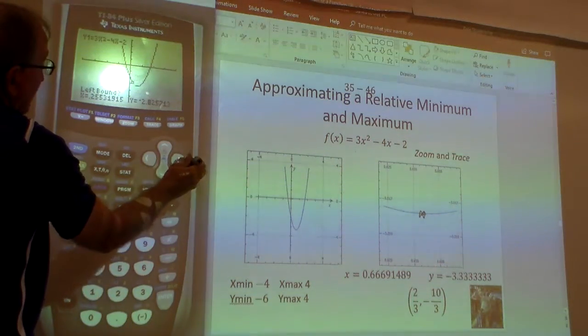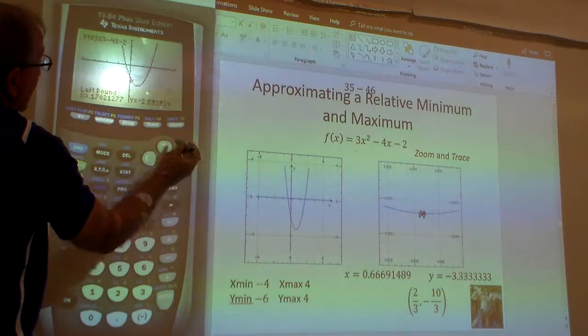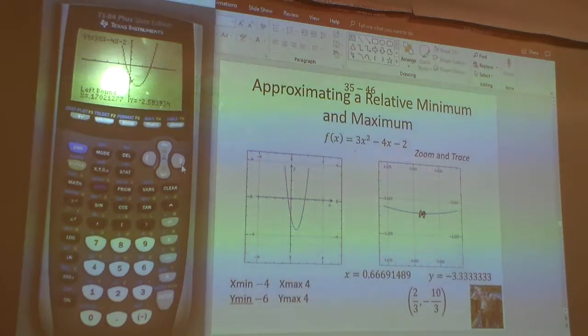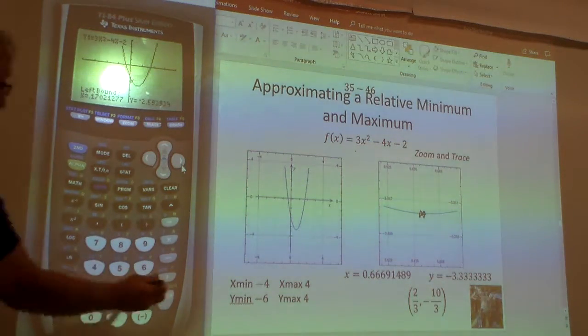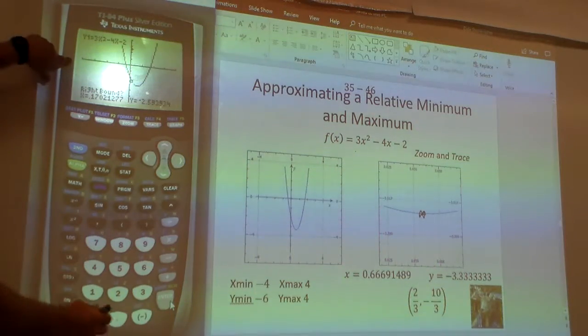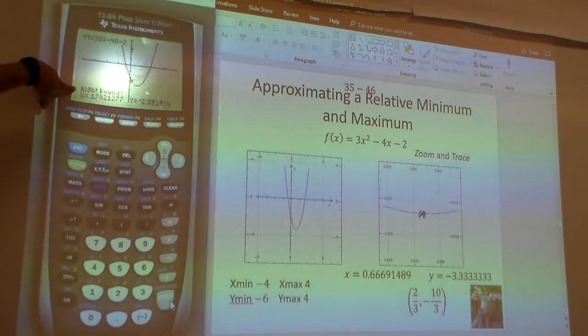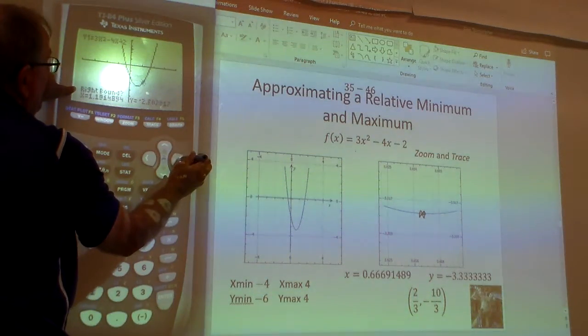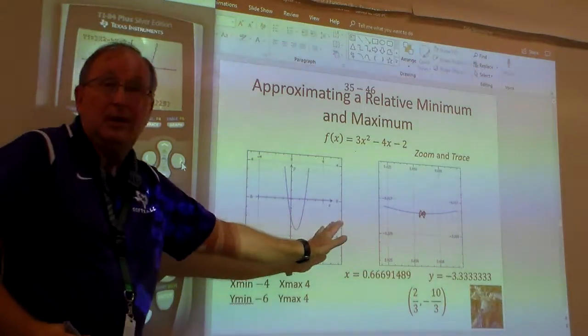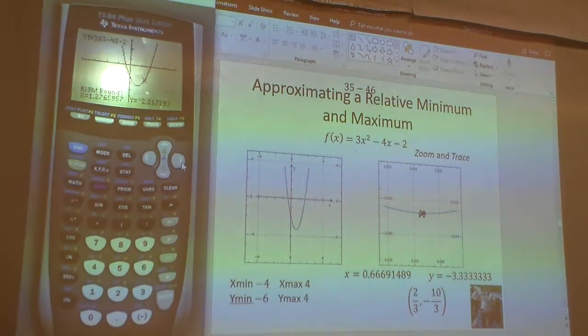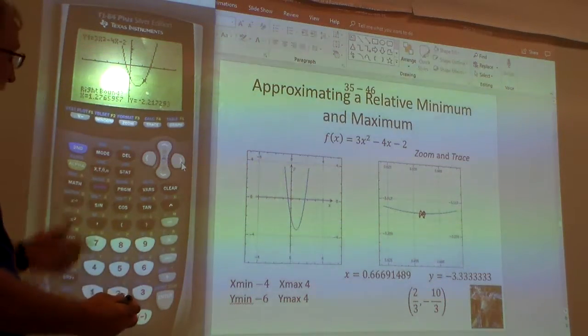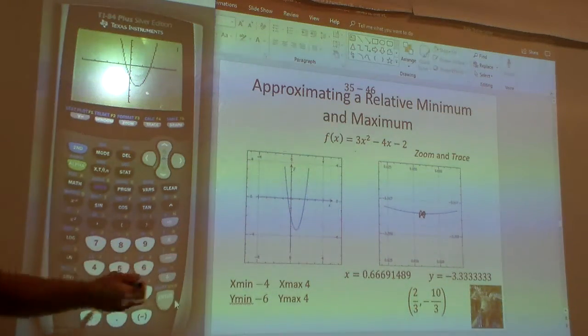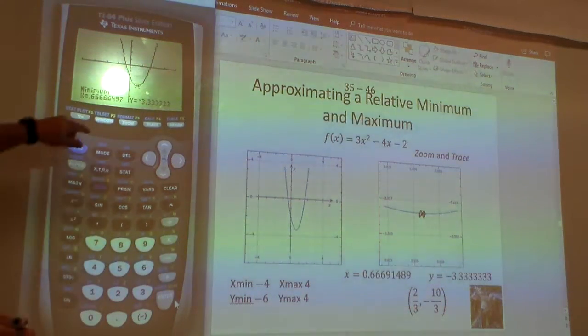I can arrow it left or right. I want it to be left of the minimum. Notice, is it flashy left of that minimum? Is it flashy left of the minimum? Yeah. So, I'm going to hit enter. And what that does is it locks the left boundary in. It no longer says left bound. Now, it says what? Right boundary. So, I want to arrow right of it. Now, am I right of the minimum? I have to be right of that hump. Okay? And once I'm right of it, anywhere right of it, I can hit enter. And that locks it in place. And then I'm going to hit enter one more time.